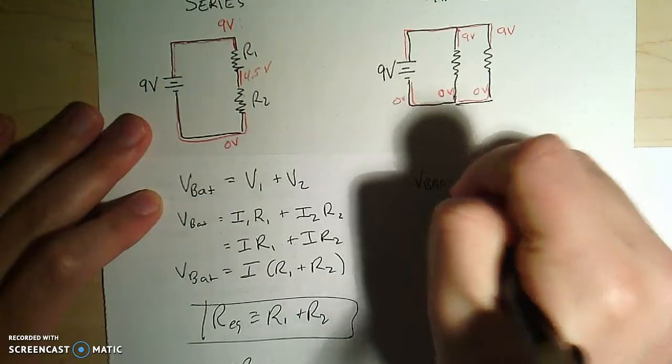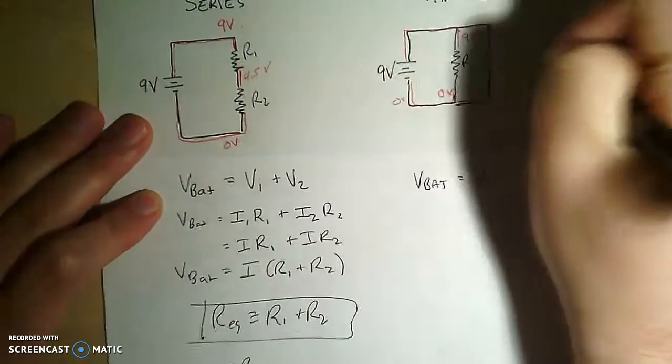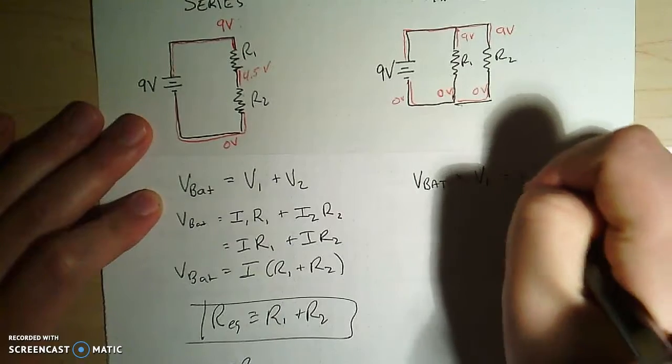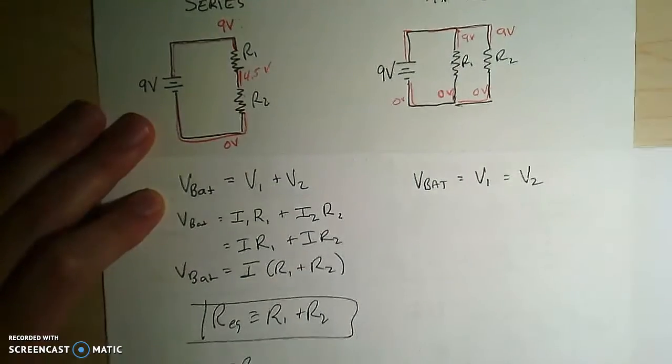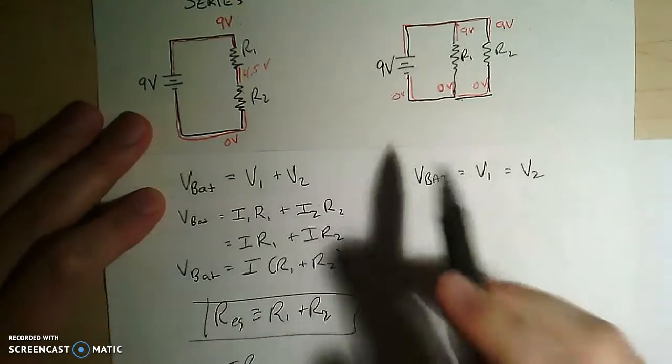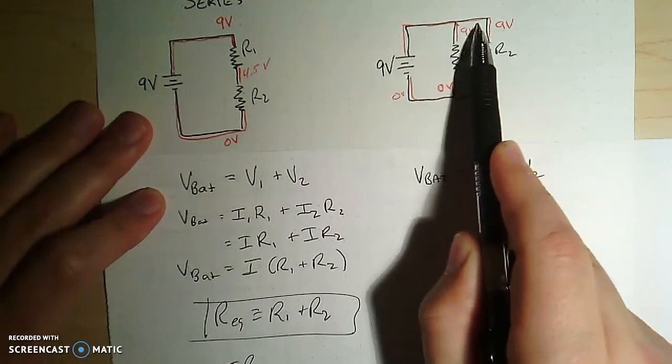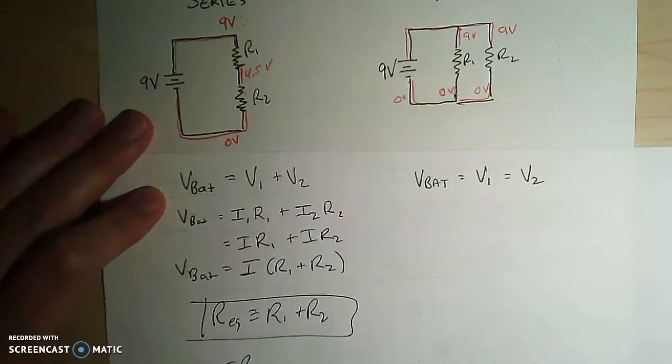So I can say that voltage of the battery equals the voltage of resistor 1 and it's also equal to the voltage of resistor 2. But what is not equal? Remember what happens is the current, when the current gets to this parallel part, the current splits up.